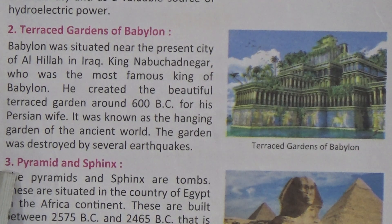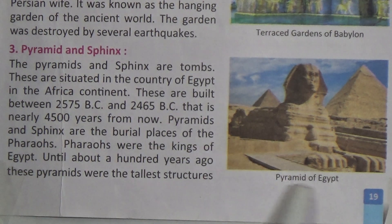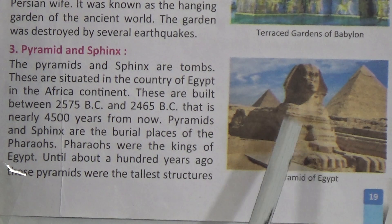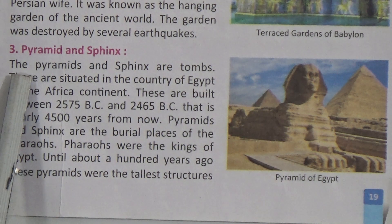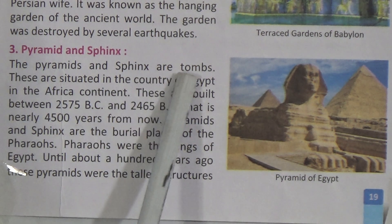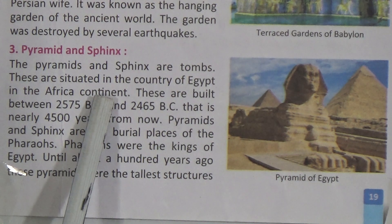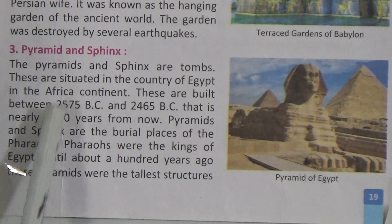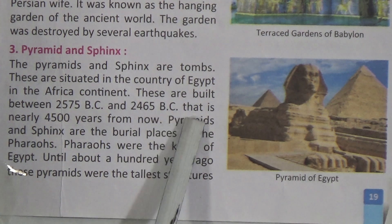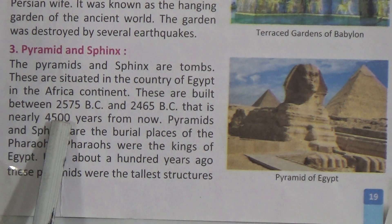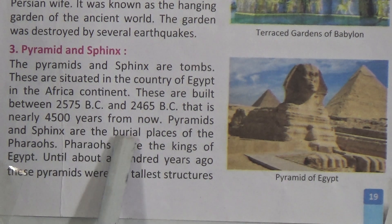Number three is the Pyramids and Sphinx. Look at the picture — there is the pyramid, and that structure is the Sphinx. The pyramids and Sphinx are tombs situated in the country of Egypt, on the African continent. These were built between 2575 BC and 2465 BC, that is nearly 4,500 years from now.